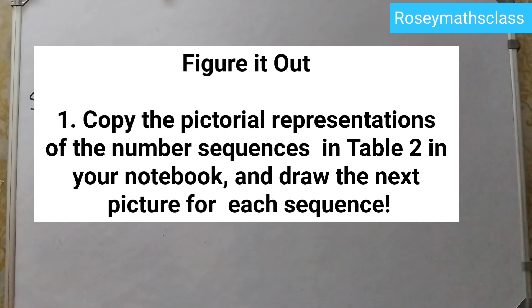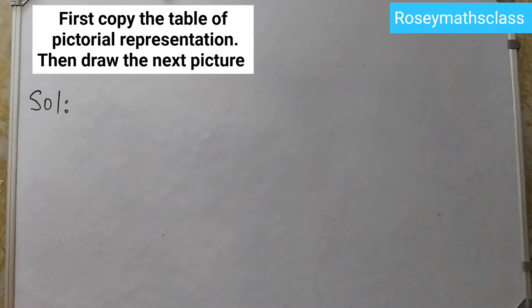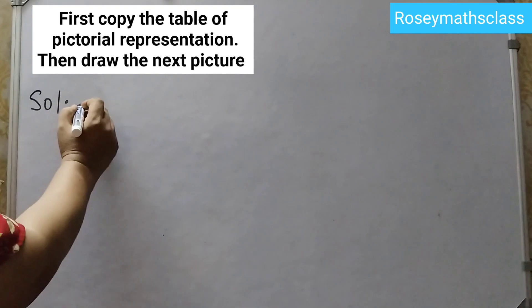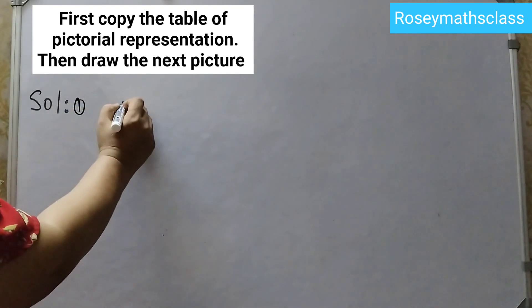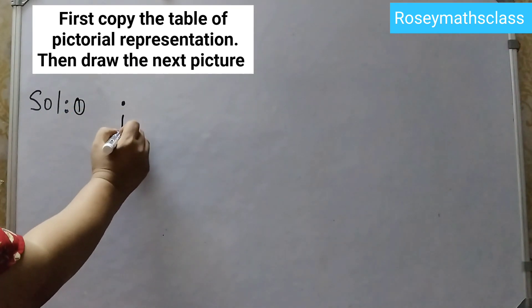Let us start with the solutions. The first one is all 1's, so the next picture would be just 1 dot and you are going to draw it like this, just 1 dot and write 1.